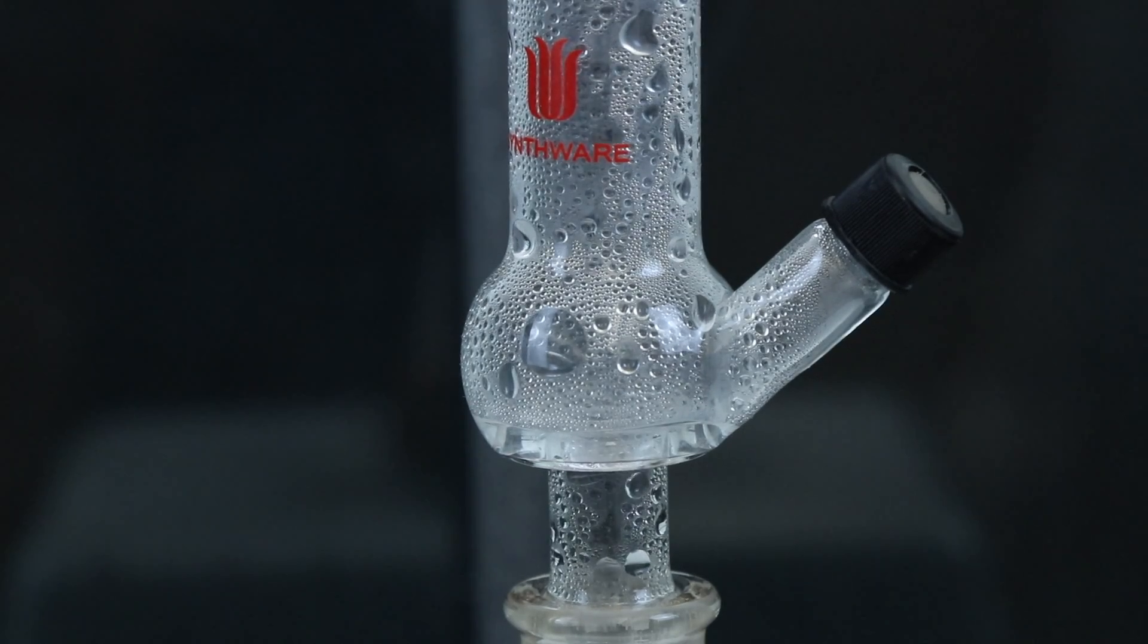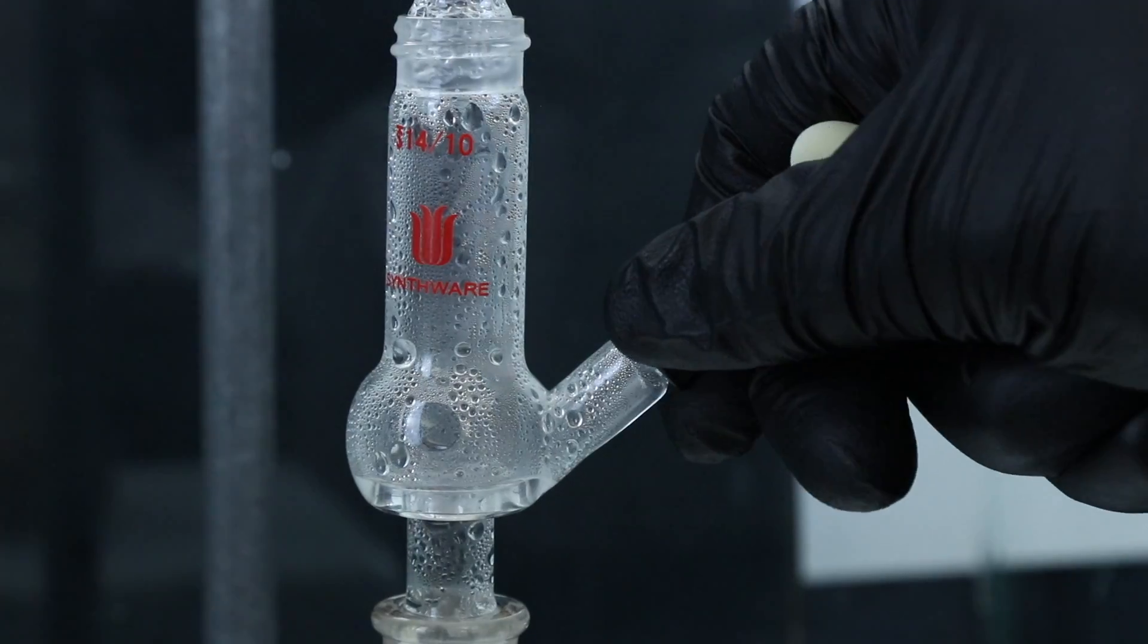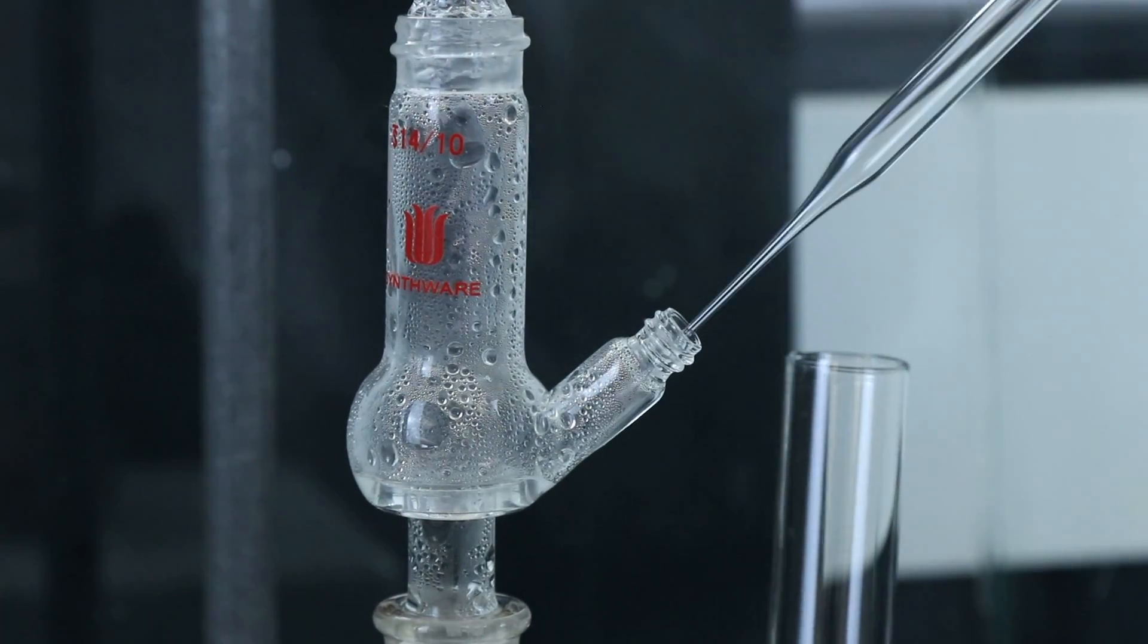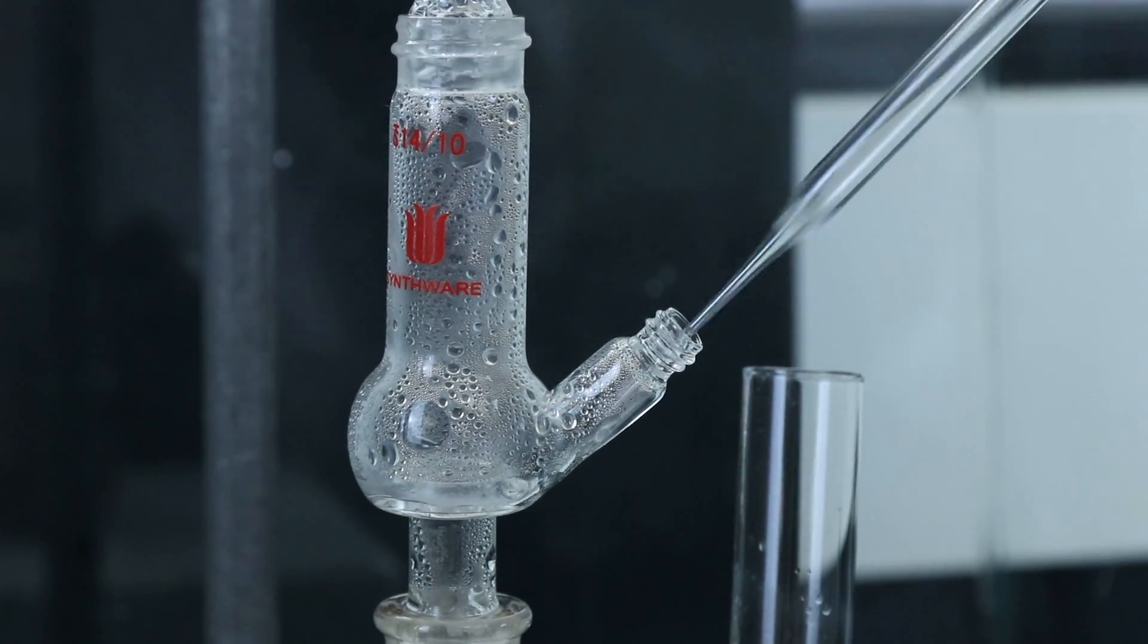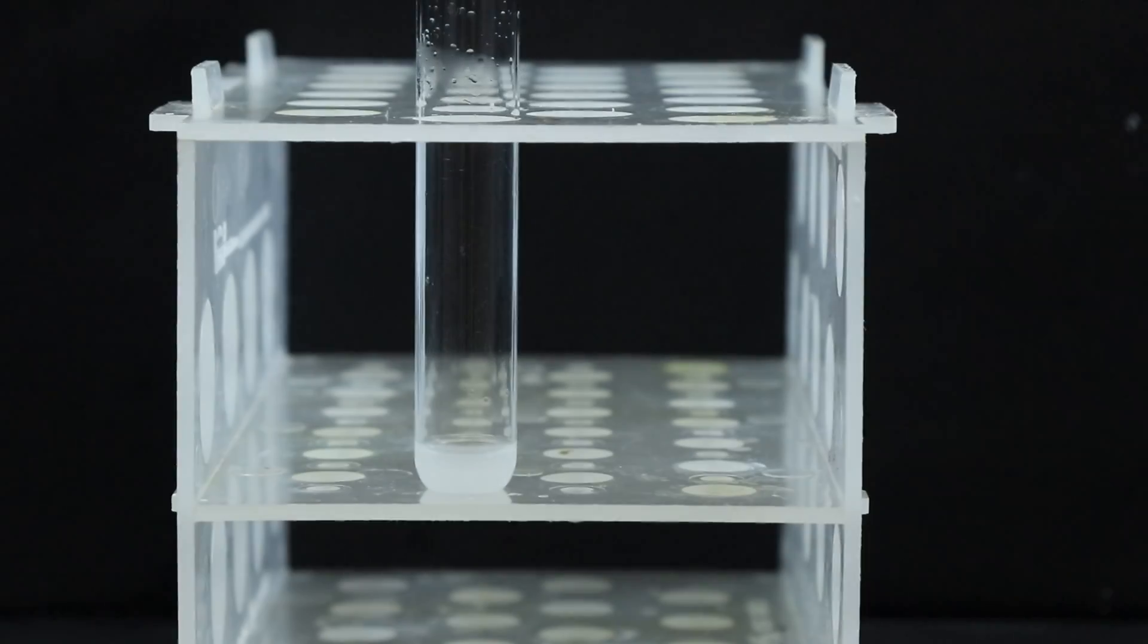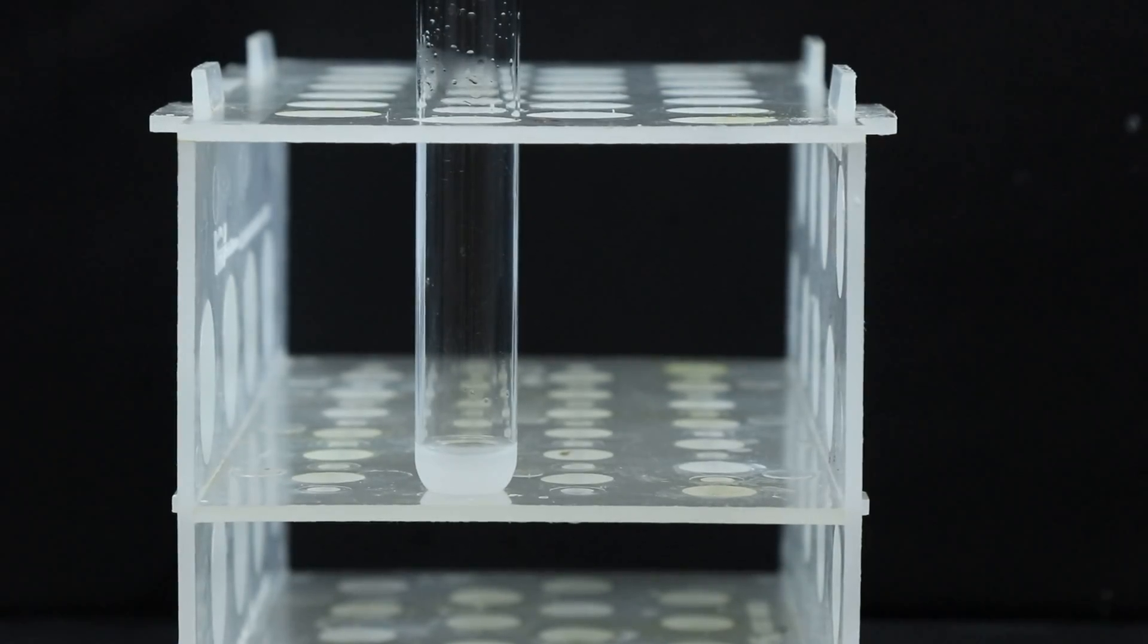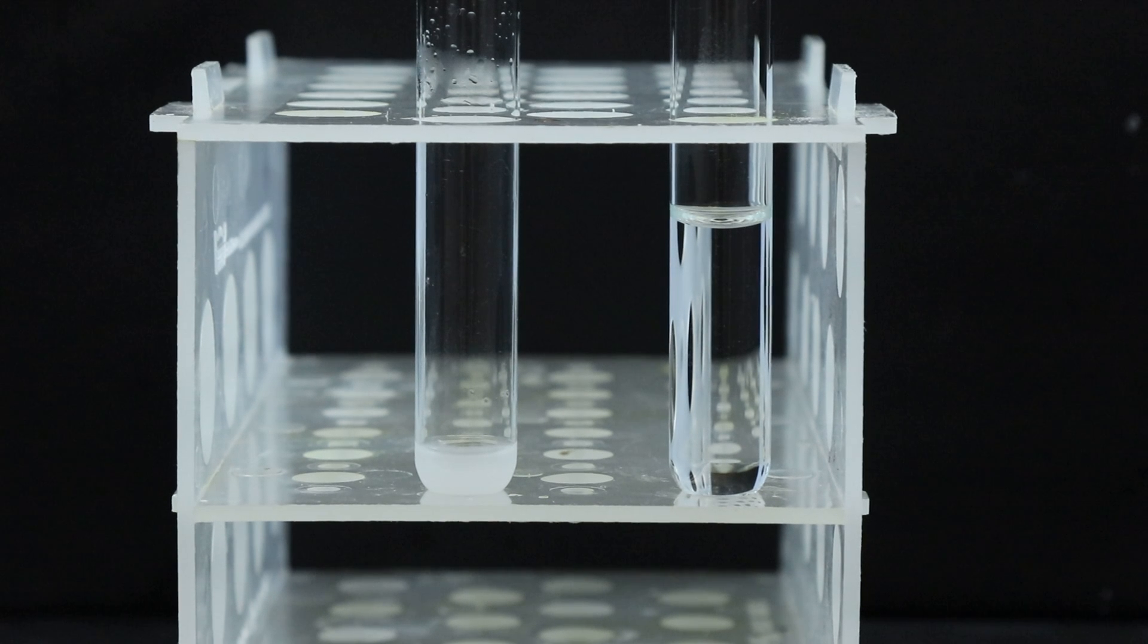It looks like enough distillate has gathered in the Hickman still now so I'm going to go ahead and start removing it and transfer it over to a test tube. I'm going to keep doing this until I've gathered five to seven milliliters of the distillate and I have a separate test tube filled with about seven milliliters of water as a reference so I'll keep going until it matches that.